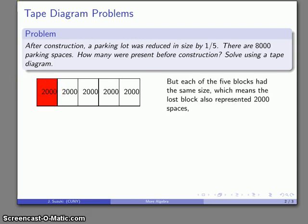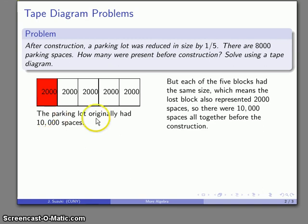And so if I think about this, this was my original parking lot before construction took out this section, then there's 2, 4, 6, 8, 10,000 spaces originally in the parking lot. And we'll go ahead and give our answer to that. The parking lot originally had 10,000 spaces.